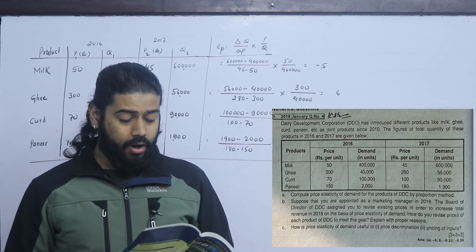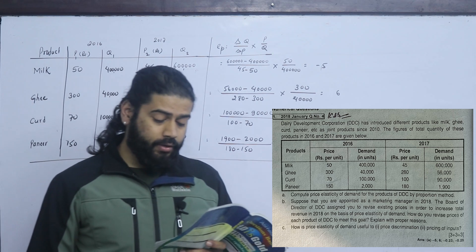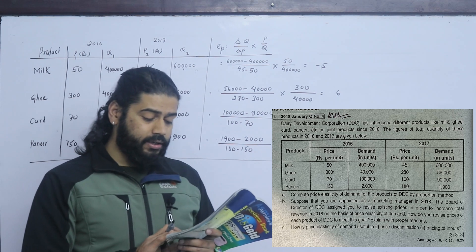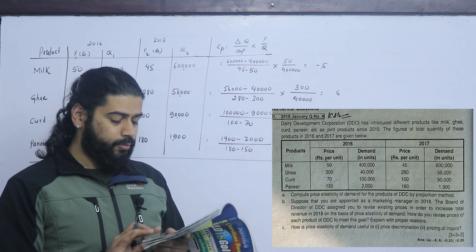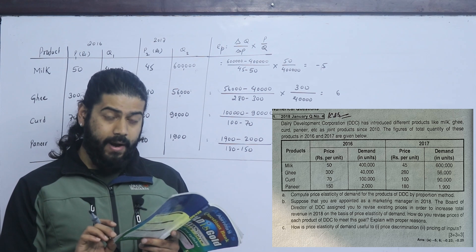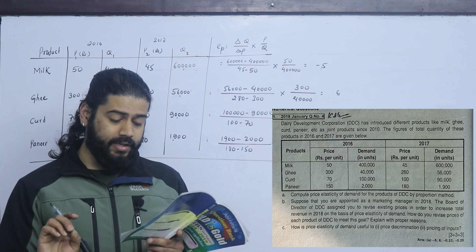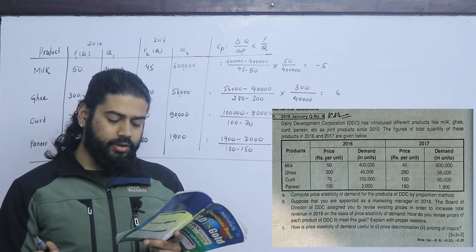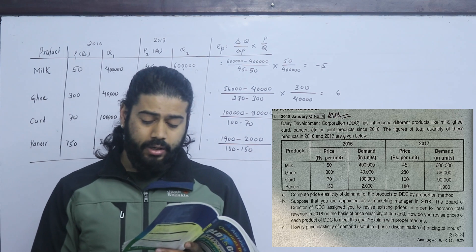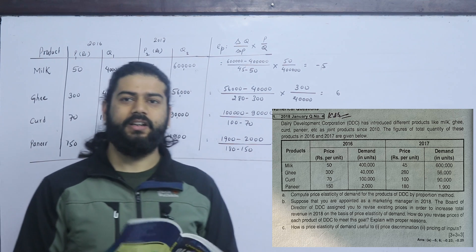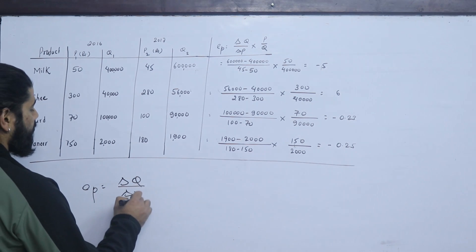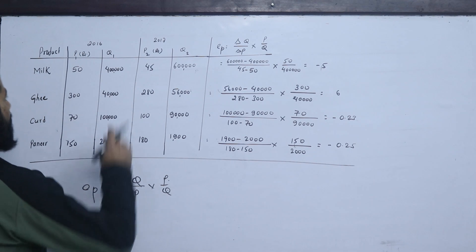This is another question. Dairy Development Corporation (DDC) has introduced different products like milk, ghee, curd, paneer, etc. as joint products since 2010. The figures for total quantity of these products in 2016 and 2017 are given below, showing data for price and quantity demanded for each product. We will calculate price elasticity of demand for each product of DDC by the proportion method.